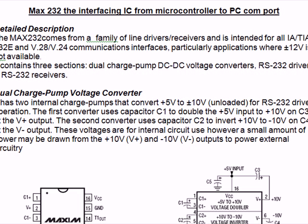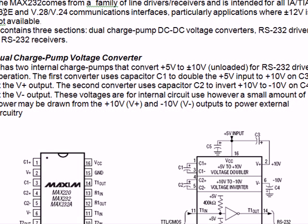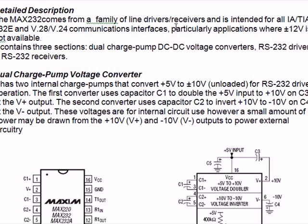Or COM 2. Detailed description: the MAX232 comes from a family of line drivers and receivers and is intended for all EIA/TIA-232E and V28/V24 communication interfaces, particularly applications where 12 volts is not available, like our microcontroller project. It contains three sections: dual charge pump DC-to-DC voltage converter, RS-232 driver, and